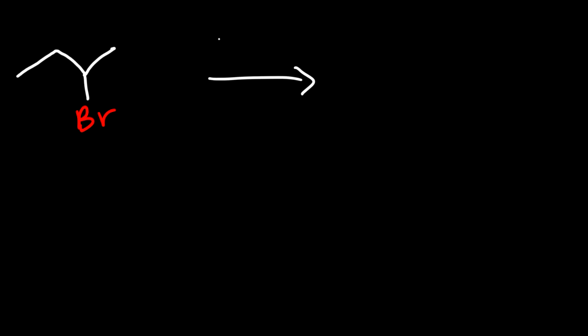In this video, we're going to go over the E2 reaction mechanism. Let's start with this example: we have 2-bromobutane, and we react it with a strong base — methoxide dissolved in methanol. So what is the major product for this reaction?